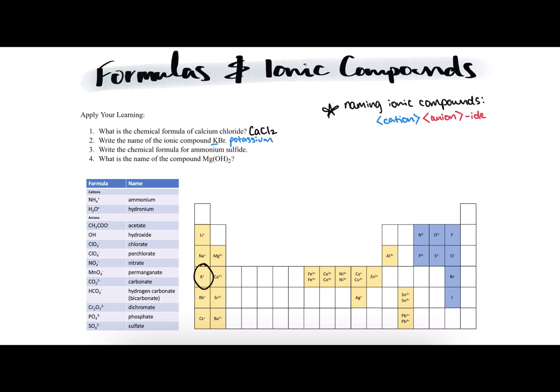Our anion is Br, which is the chemical symbol for bromine, which is at the end of the periodic table here with a minus 1 charge. Since the stem of bromine is brom, we take that stem and then we add ide to the end of it. So the name of KBr would be potassium bromide.